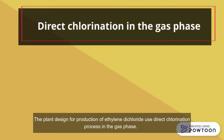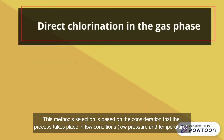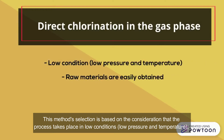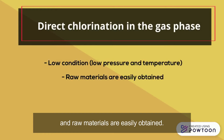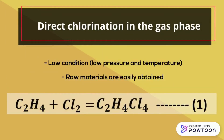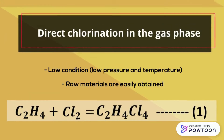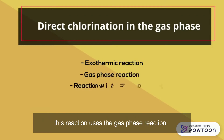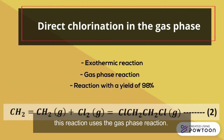This method selection is based on the consideration that the process takes place under low conditions — low pressure and temperature — and raw materials are easily obtained. The first process equation is an exothermic reaction. From operating conditions consideration and reaction ease of raw materials, this reaction uses the gas phase reaction.